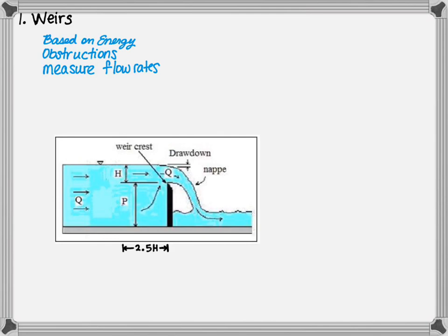A weir is basically an obstruction in an open channel flow path. The flow rate is determined based on the energy equation. Weirs are commonly used for measurement of flow rates. They function by causing water to rise above the obstruction in order to flow over the weir.